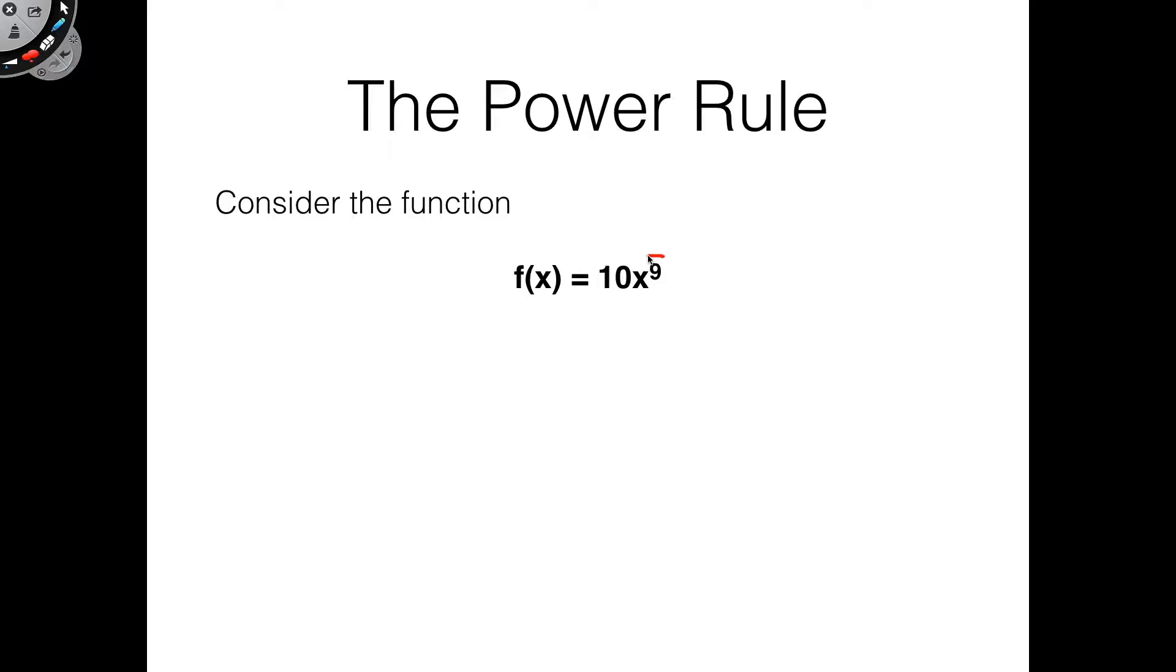So here's how you do it. You take this 9 up here, which is your power, and then you multiply it down here to your leading coefficient. So you take your degree, or your exponent, multiply it to your leading coefficient.